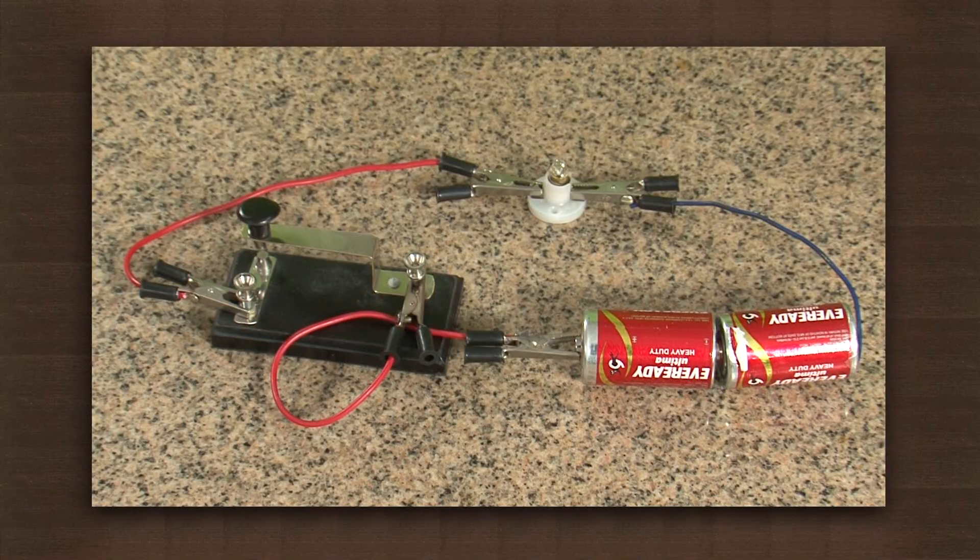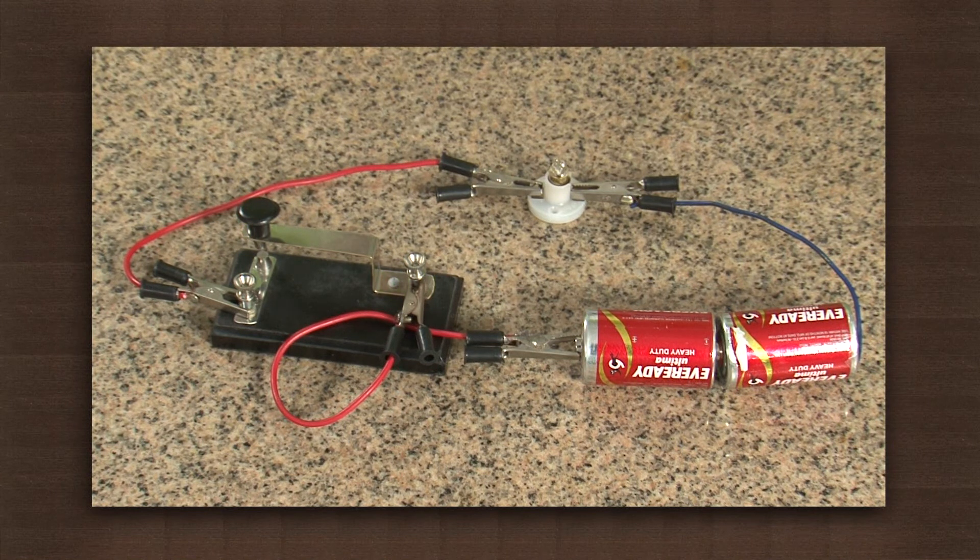When we draw a diagram, we have to be absolutely sure that all the appliances are properly represented and the circuit gets completed and comes back to the source. Now we will connect the circuit as per the diagram and close the key.